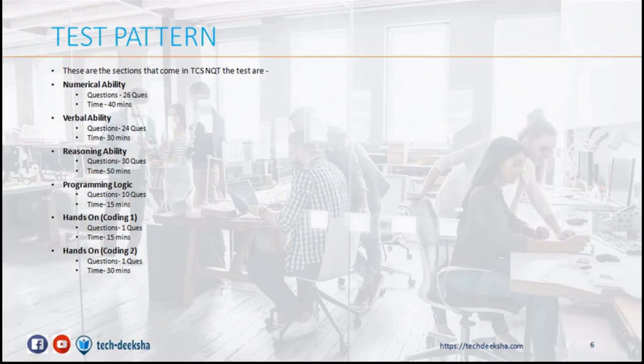In the first aptitude part, we will have numerical ability, verbal ability, and reasoning ability. In subjective test, we will have programming logic, hands-on coding 1, and hands-on coding 2. This hands-on coding 1 and 2 means there will be two coding questions where you need to write the full code.